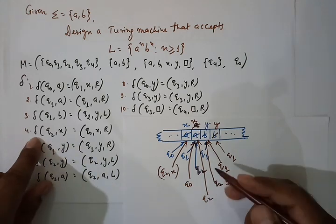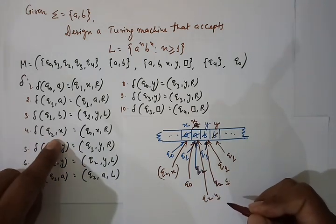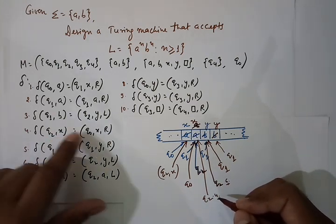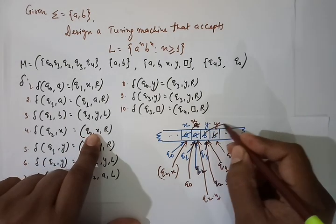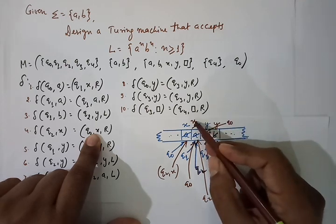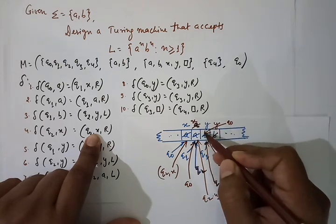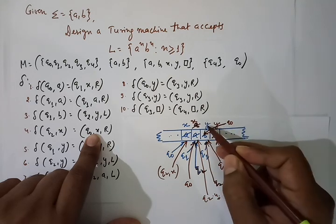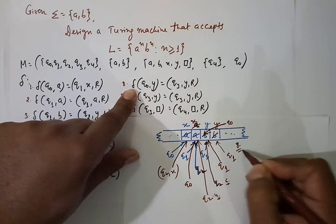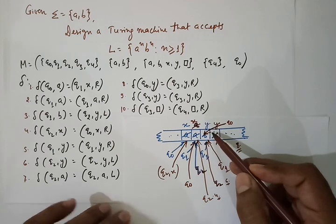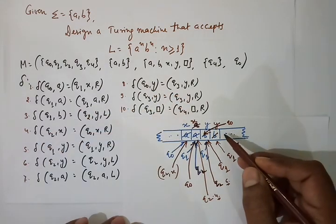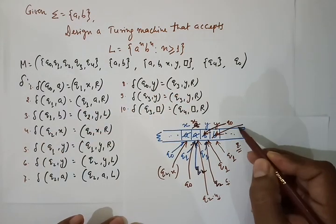Now in state q0 reading 'Y', rule number 8 applies for the first time: we change state from q0 to q3, replace Y with Y, and move one cell right. In state q3 reading 'Y', rule number 9 applies: state remains q3, replace Y with Y, and move one cell right. Moving right brings us to a blank symbol, and our state is still q3.